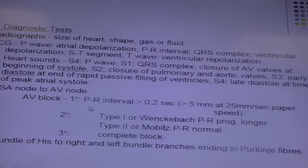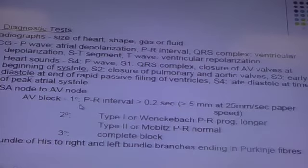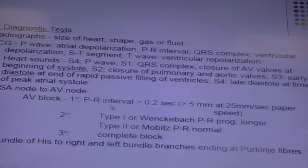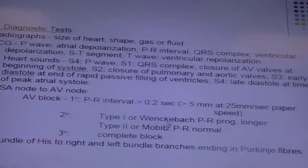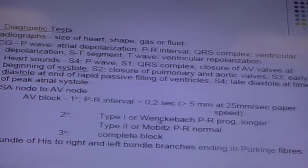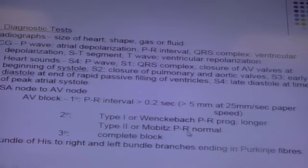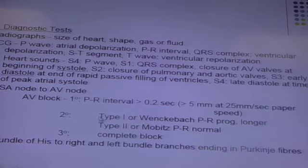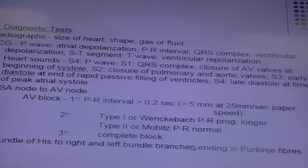Remember your AV block — primary, secondary, and tertiary. With first-degree AV block, the PR interval is just slightly increased — that's the only abnormality seen. Second-degree AV block has type 1 and type 2. Type 1 — called Wenckebach in human medicine, where they like naming things after people — involves the PR interval getting progressively longer until you have a dropped QRS complex.